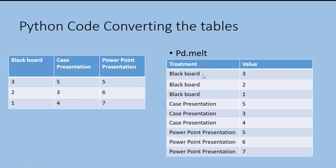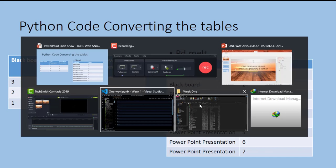The two columns we need are 'treatment' and 'value'. The command we use to do this is pd.melt — it is a command in Python we will be demonstrating shortly. So we will have, for instance, blackboard with value 3, then blackboard 2, blackboard 1, and then case report. Let's demonstrate this now in Python.